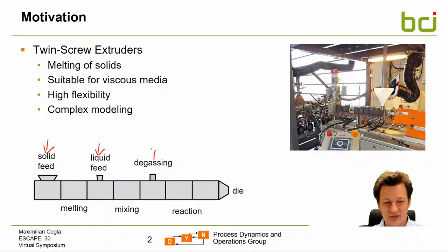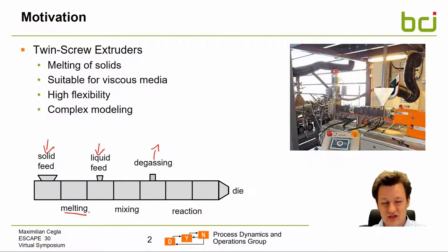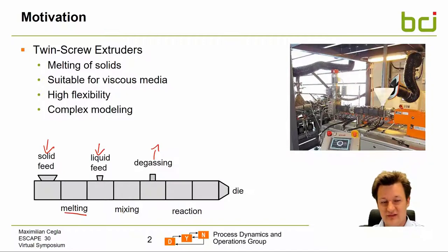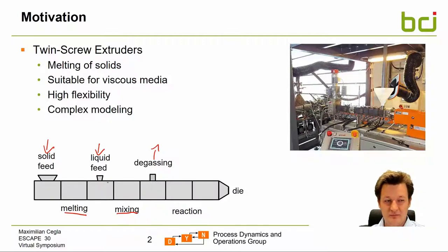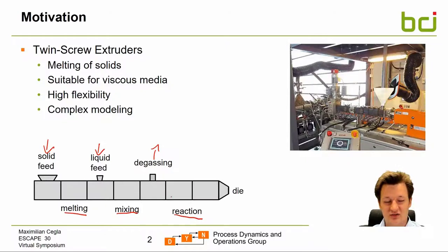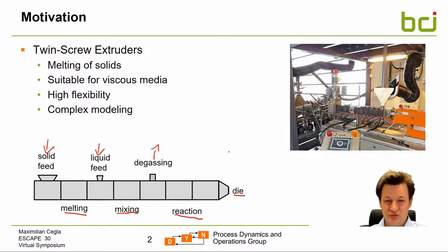A gas removal is possible — for example, if a chemical reaction generates gas, it can be removed along the length of the extruder. The extruder also involves specialized zones, such as melting zones where elements transport high shear stress to melt the polymer flakes, as well as mixing zones that promote axial mixing by moving material in both directions. Anti-chemical reactions can also be performed within the twin screw extruder, and the product can be shaped using the die. Due to its high flexibility, it has a very high modeling effort.